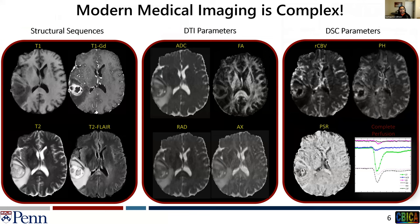Modern medical imaging is extremely complex, as evidenced by the following scans that are routinely acquired for any suspected brain tumor patient in our university hospital. The structural sequences define the anatomical characteristics of the subject, while diffusion tensor and dynamic susceptibility contrast images try to provide an outline of the physiological characteristics.